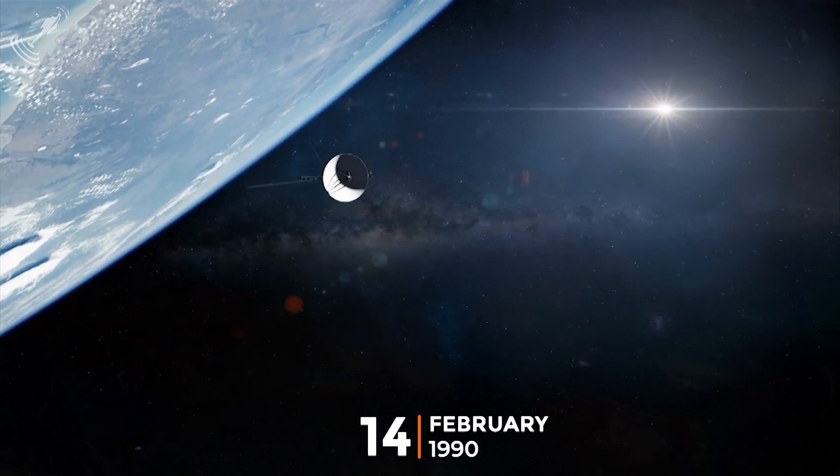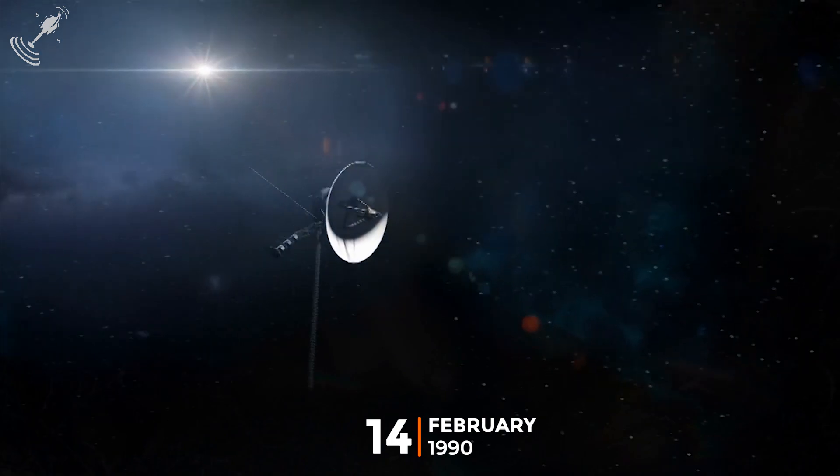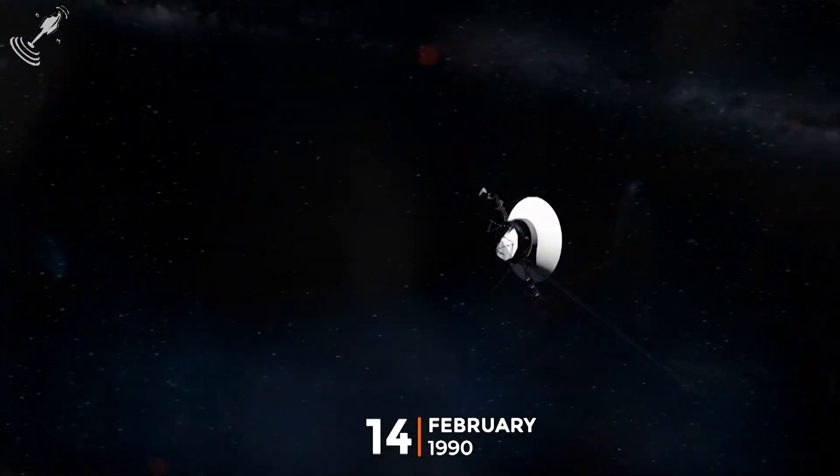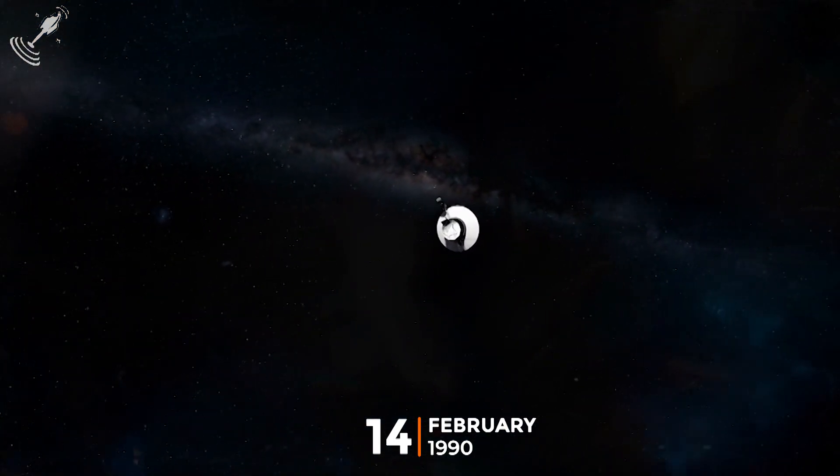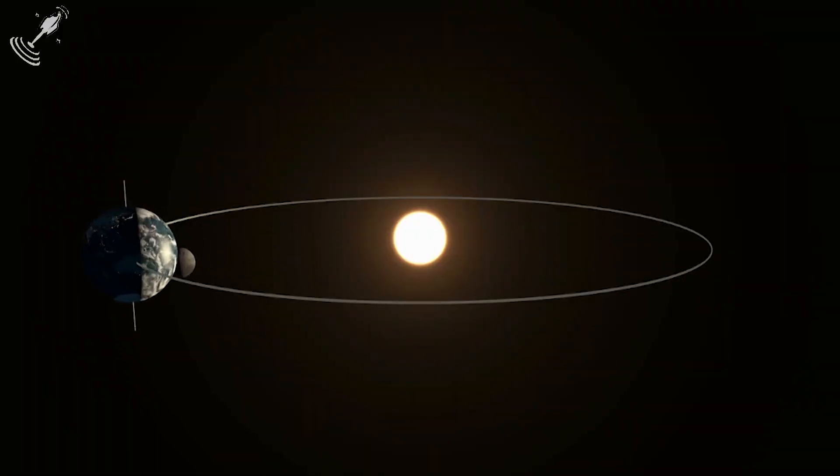On February 14th, 1990, NASA ordered Voyager 1 to make a brief turn of its cameras to photograph the planets it had left behind. Of the 60 images from this unique event, one of the images beamed back by Voyager was the Earth at 6.4 billion kilometers, 42 times the distance between the Earth and the Sun.